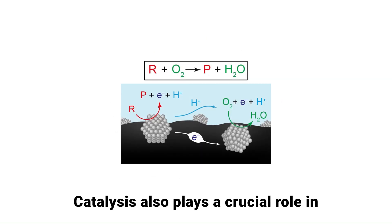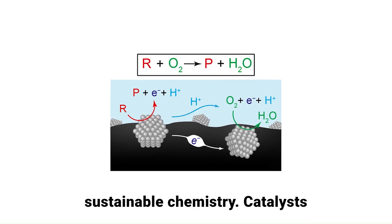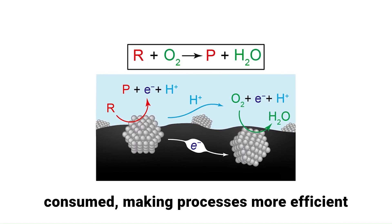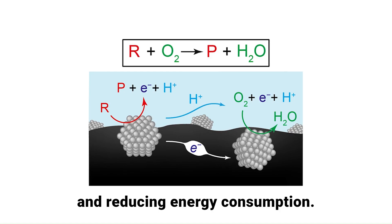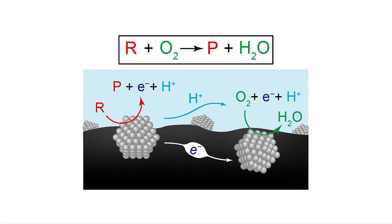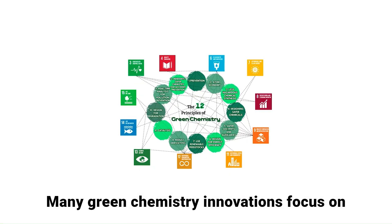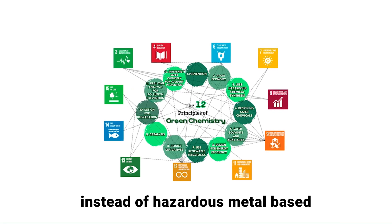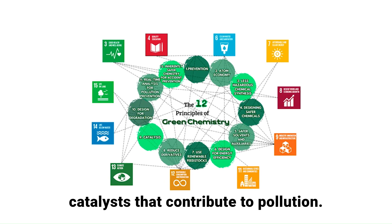Catalysts also play a crucial role in sustainable chemistry. Catalysts speed up chemical reactions without being consumed, making processes more efficient and reducing energy consumption. Many green chemistry innovations focus on using biodegradable or reusable catalysts instead of hazardous metal-based catalysts that contribute to pollution.